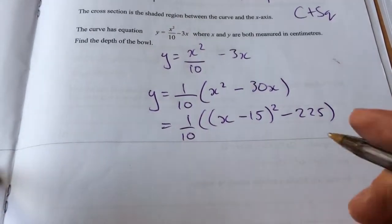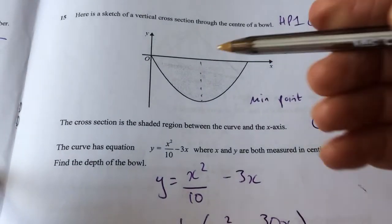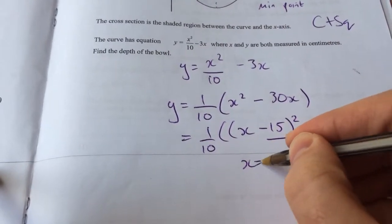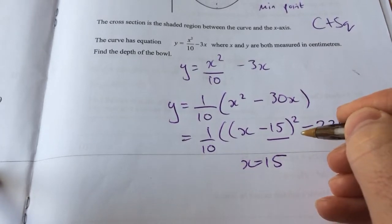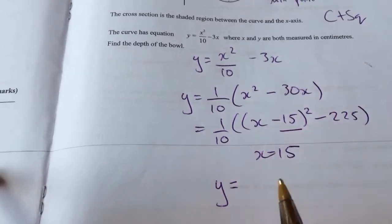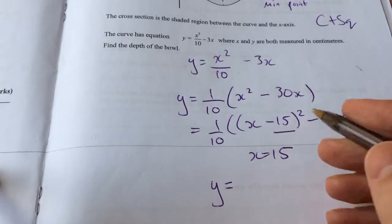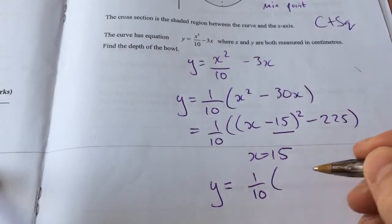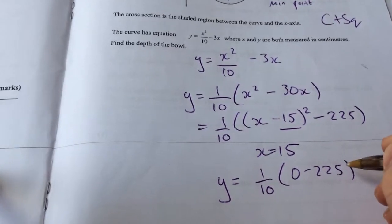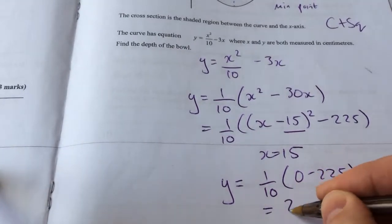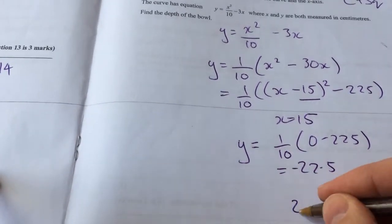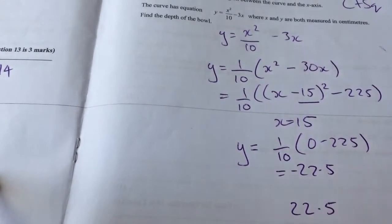Now we know that the minimum point will take place when x equals 15. But they want the depth of the bowl, so I want the y-value. When x is 0, it becomes 1 tenth of (0 minus 225), which is negative 22.5 — so we know the depth of the bowl is 22.5.